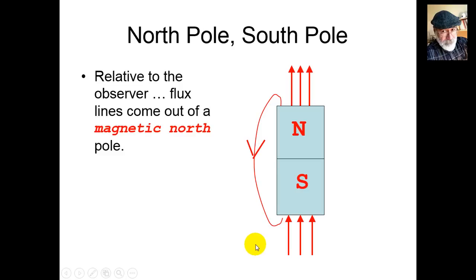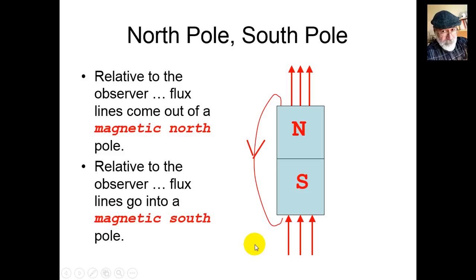North pole, south pole: a convention. In a permanent magnet, we have agreed that magnetic flux lines come out of the north pole with respect to the observer and they sink into a south pole.